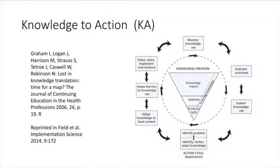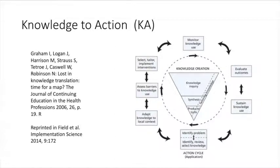The knowledge-to-action — or knowledge-to-action-to-practice — model is a paper by Graham et al., published in 2006 and reprinted by Field et al. in 2014. The basis of knowledge-to-action theory is that when you provide people with information, they don't always change their behavior. Creating knowledge and operationalizing that knowledge are seen as two different systems. The model involves knowledge inquiry, synthesis, producing tools, tailoring knowledge, identifying the problem through an action cycle, and adapting knowledge to a local context so that interventions become acceptable and there is sustained use of that knowledge, monitored and evaluated in the audience.